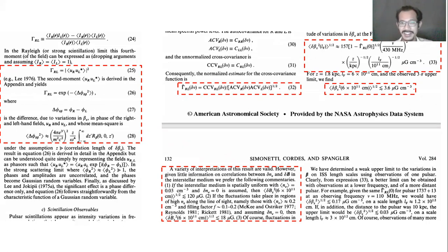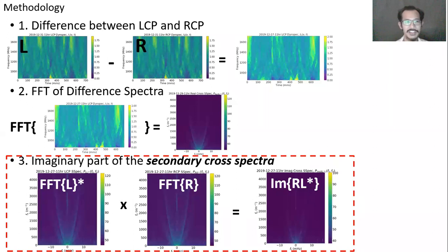And this is our methodology. We form spectra of left circular polarizations and right circular polarizations and subtract them, hoping that the result is some strong differentially scintillating pattern. And if we take the Fourier transform of that differential scintillating pattern, we hope to see parabolic arcs in the secondary spectrum. Now these two have been done before.